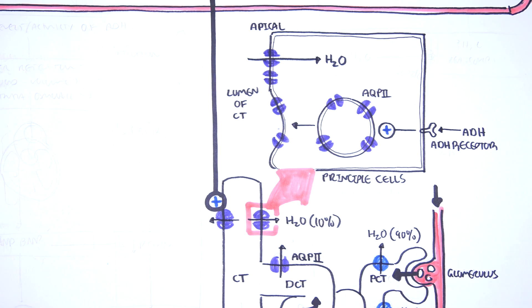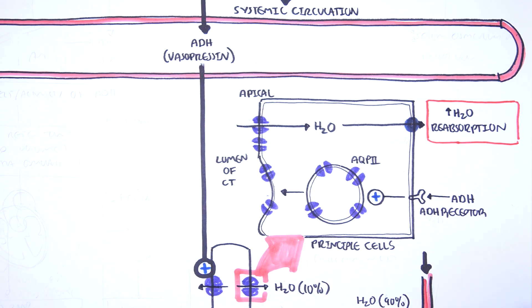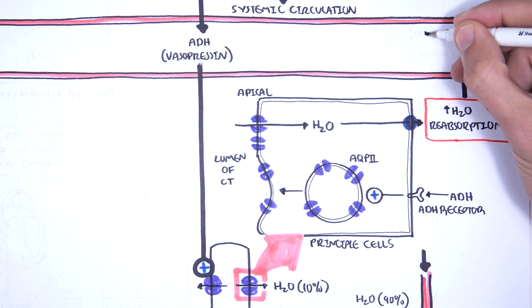Water enters the cell. The water then gets reabsorbed into circulation. The increase in water reabsorption increases blood volume and also decreases serum osmolarity.